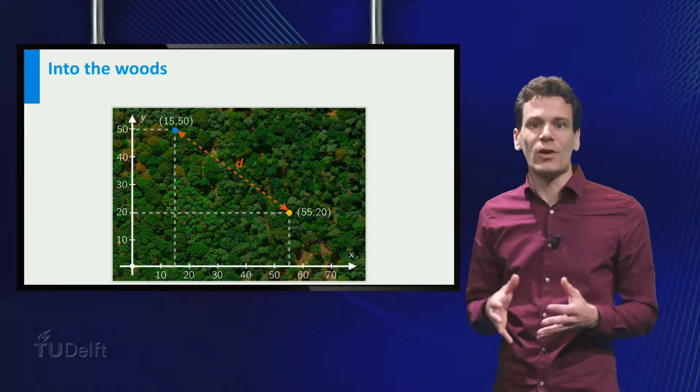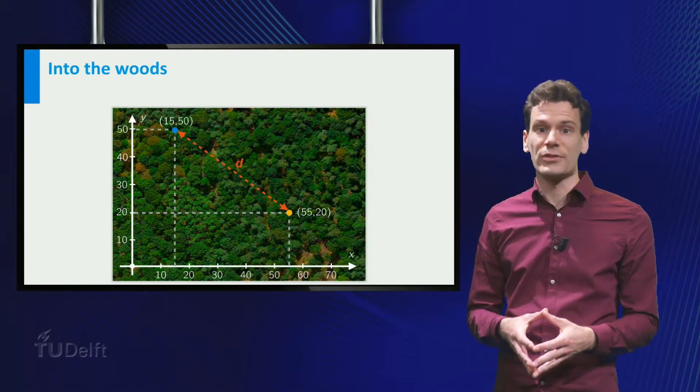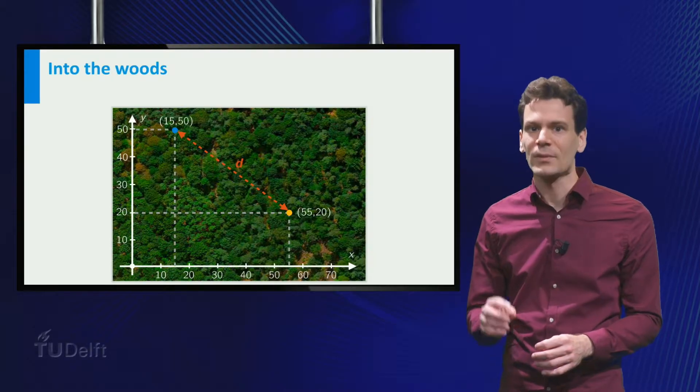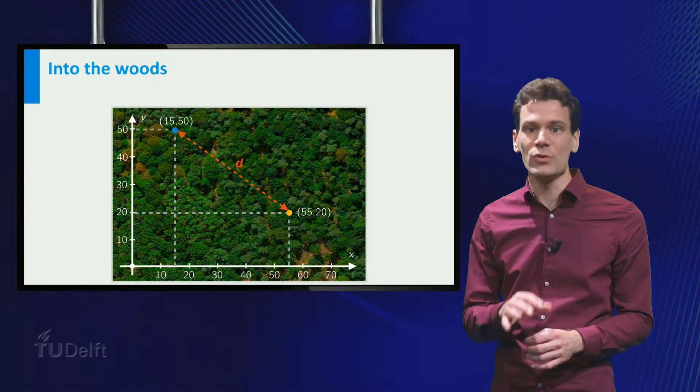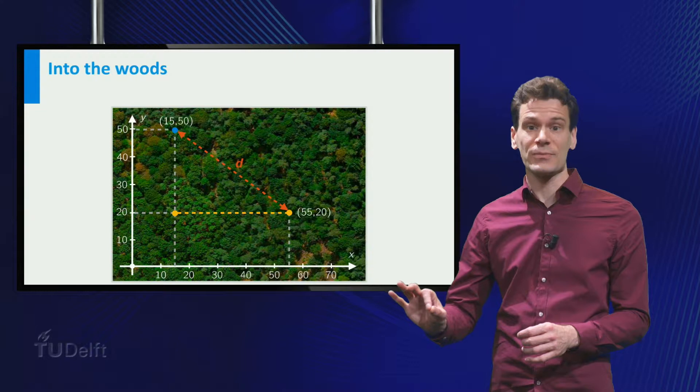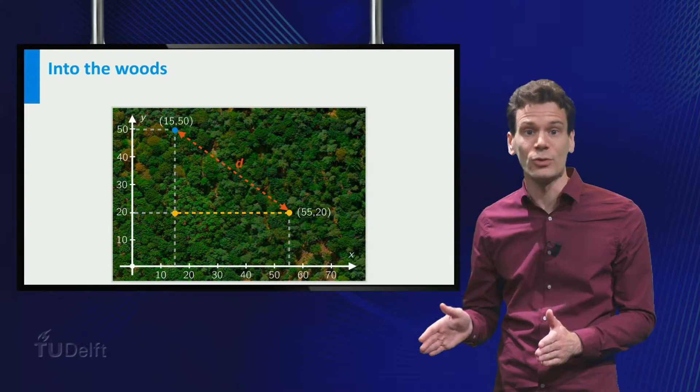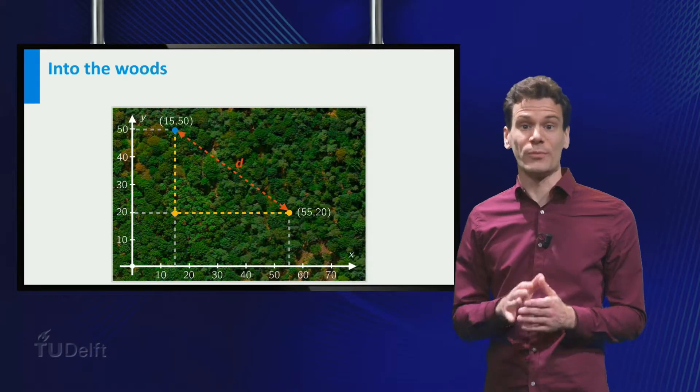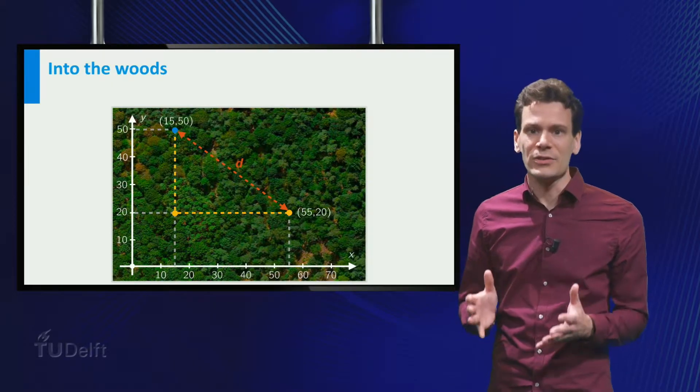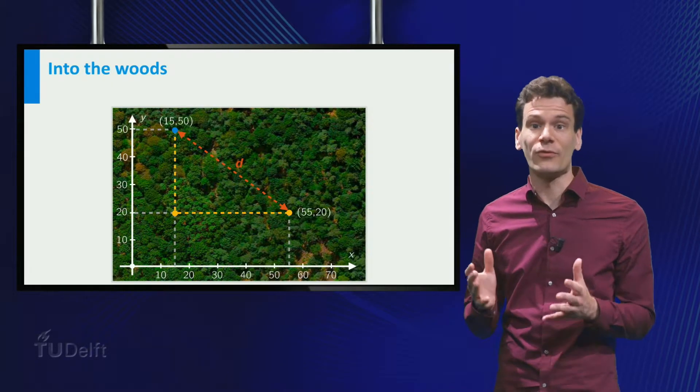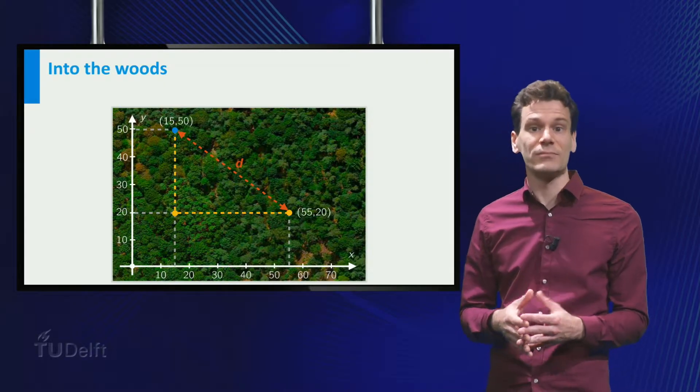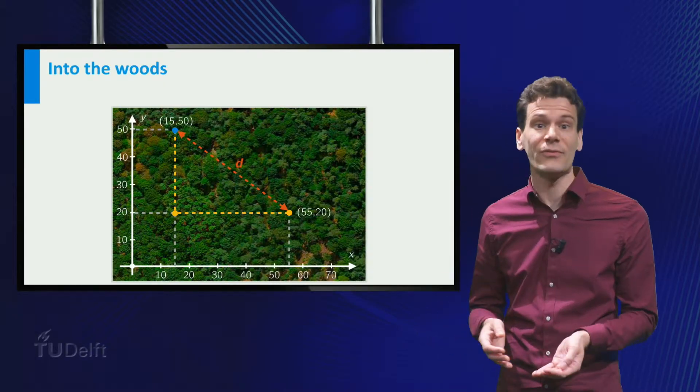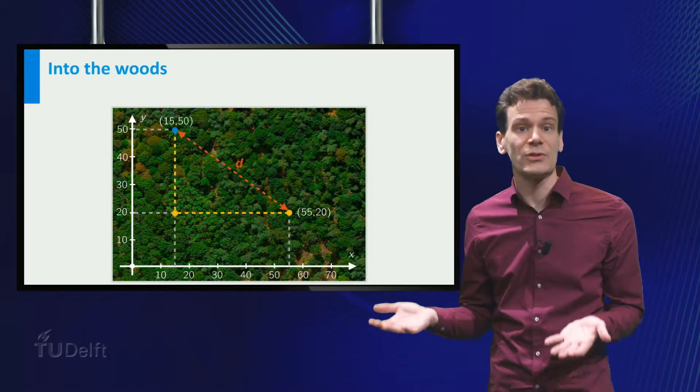You cannot read off the distance directly from these coordinates, but think of the following. You can reach your friend by first moving parallel to the x-axis and then moving parallel to the y-axis. In the first part, the y-coordinate remains constant. The distance that you have to travel in the first part follows from the change in x-coordinate. This changes from 55 to 15, so the distance is 40 meters.